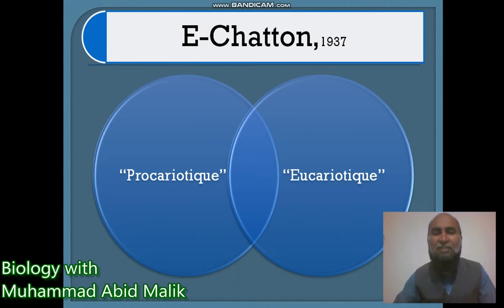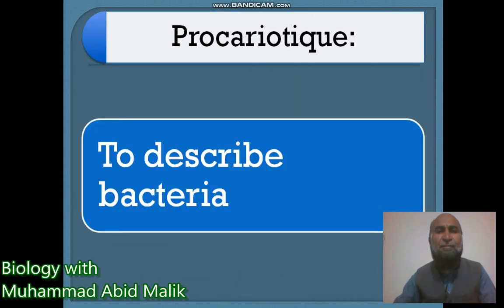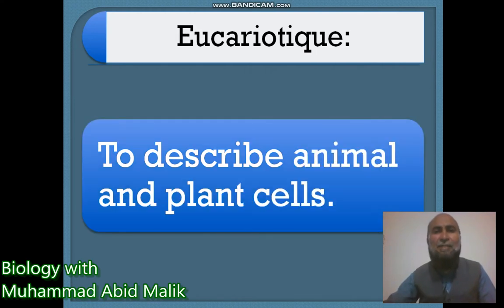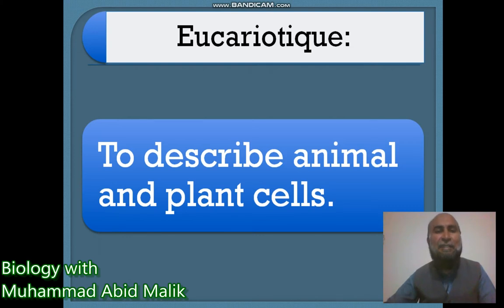First of all, we try to understand about Prokaryotic. In the Prokaryotic segment, each term describes about bacterial cells. And in the second segment, in the Eukaryotic segment, each term tries to describe animal and plant cells. Very simple. So those are the first two terms — Prokaryotic and Eukaryotic — that we have already covered.